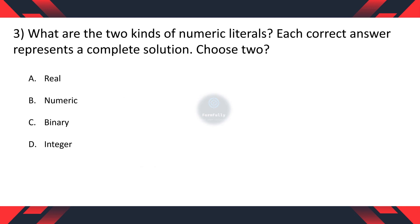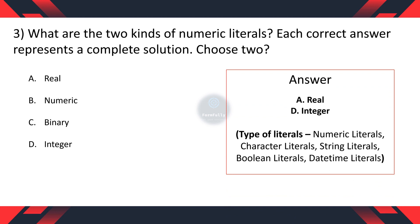Question 3: What are the two kinds of numeric literals? Each correct answer represents a complete solution. Option A: real, B: numeric, C: binary, D: integer. The correct options are A and D: real and integer.